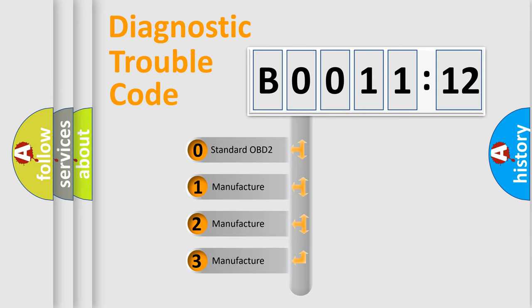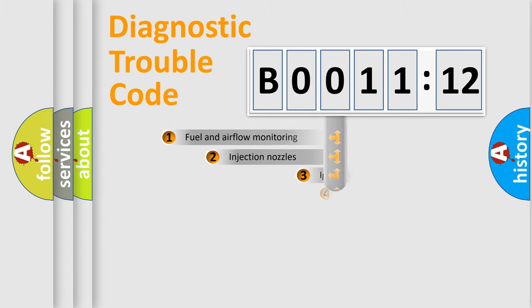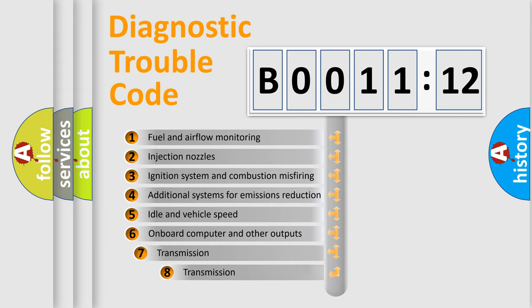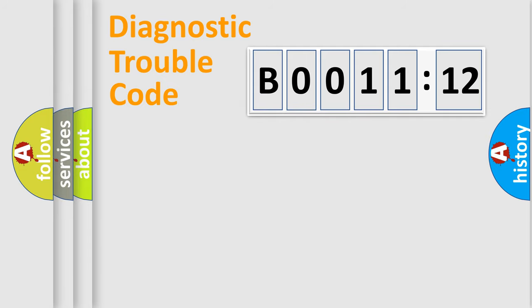If the second character is expressed as zero, it is a standardized error. In the case of numbers 1, 2, or 3, it is a more prestigious expression of the car-specific error. The third character specifies a subset of errors. The distribution shown is valid only for the standardized DTC code. Only the last two characters define the specific fault of the group.